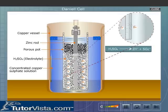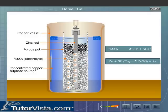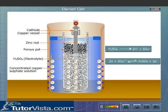Sulfuric acid in solution splits into hydrogen and sulfate ions. The negatively charged sulfate ions move to the zinc rod and transfer their free electrons, forming zinc sulfate. The zinc rod attains a negative charge due to the excess of electrons, and thus the zinc rod becomes a cathode — the negative electrode.